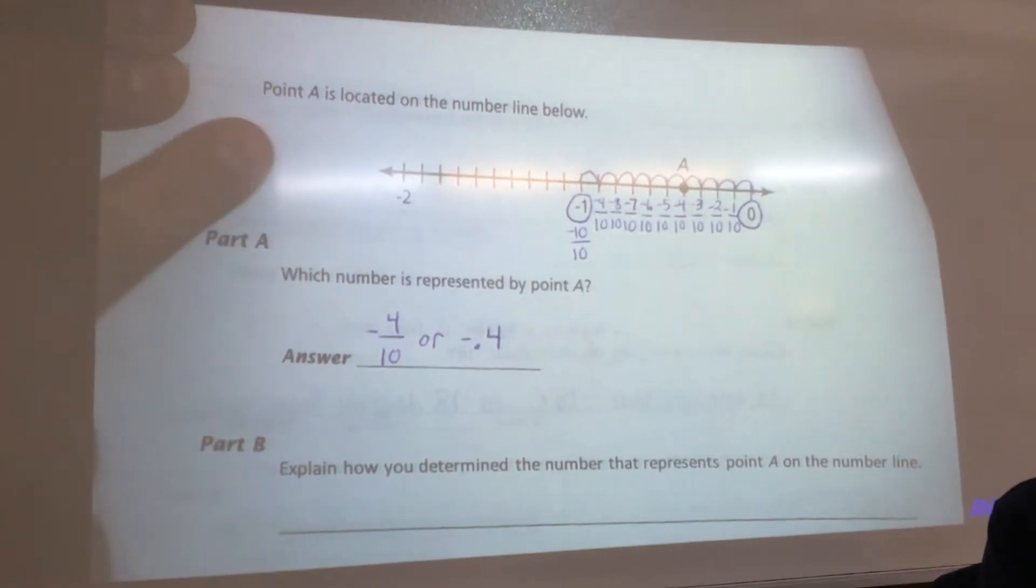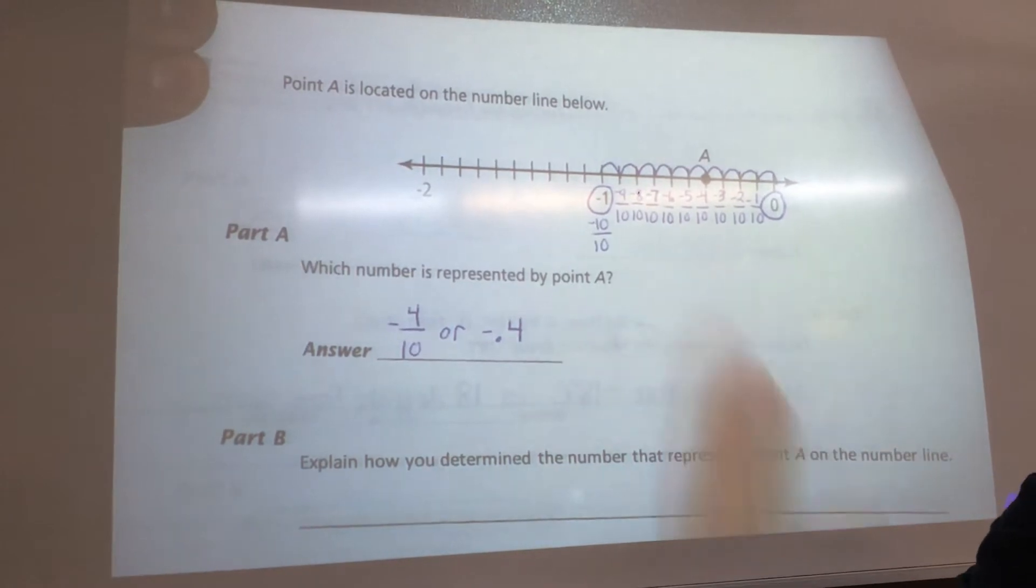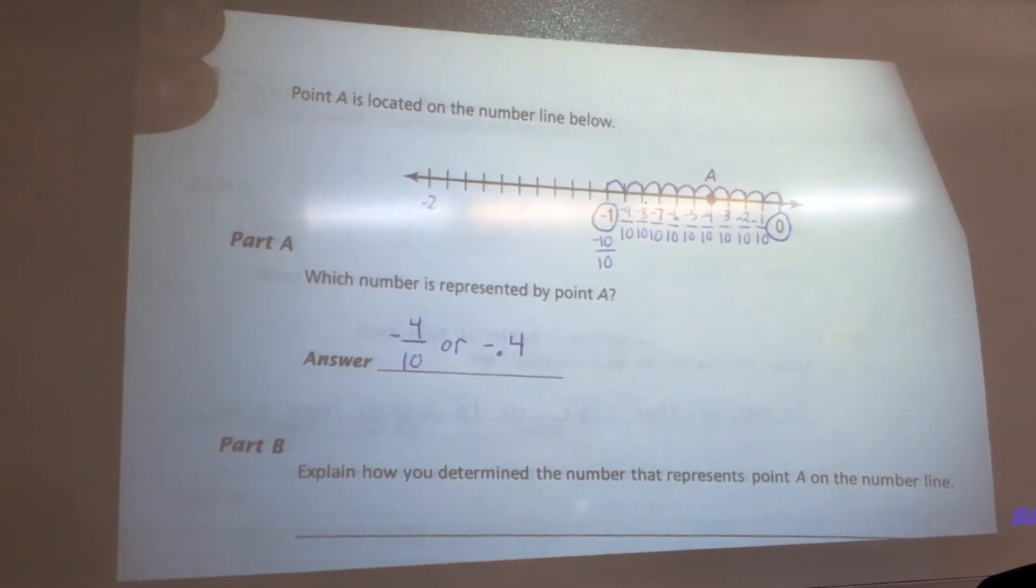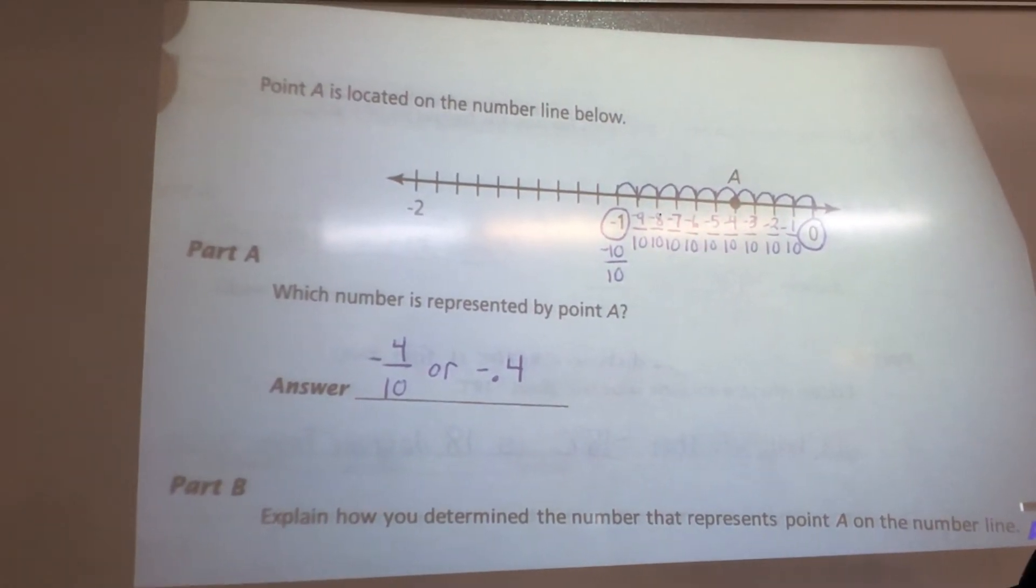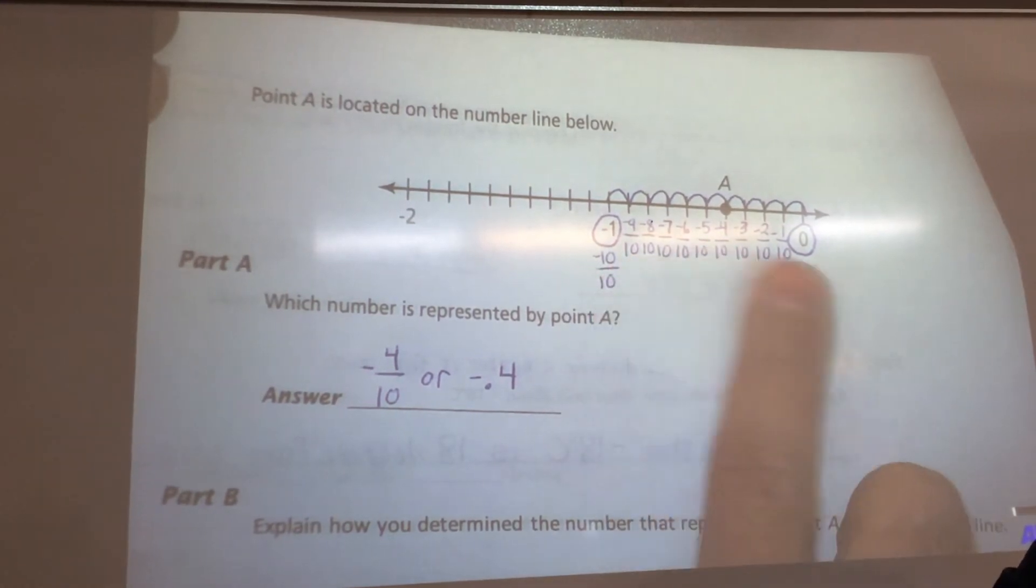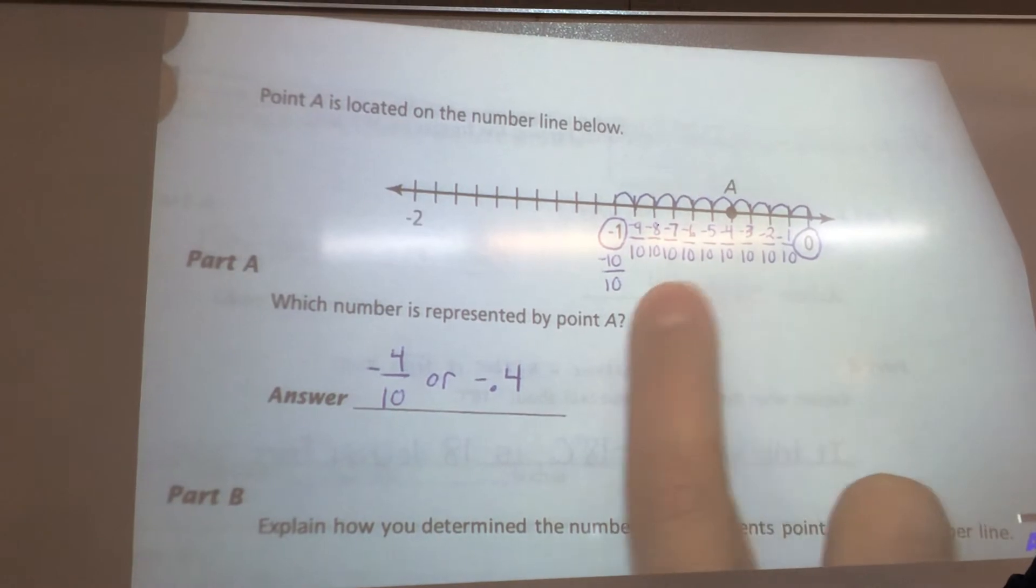So this problem says point A is located on the number line below, and you're probably thinking, wait a second, you already wrote down the answer to part A. I did, that's because most people got part A right. That is not the point of this video. But just to be clear, whenever you see a number line, you circle and count the number of jumps. I got it to be 10 jumps, so my denominator is 10.